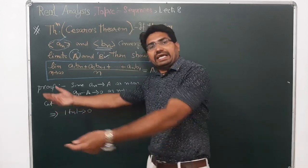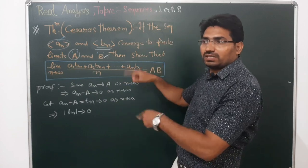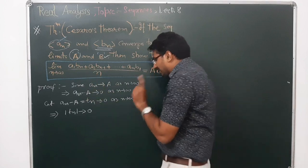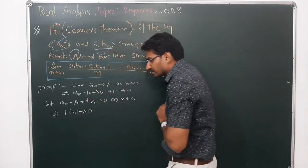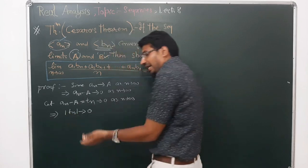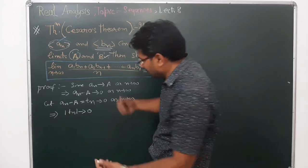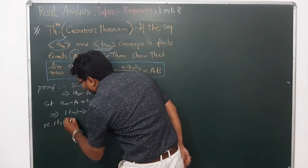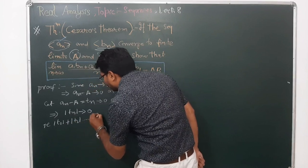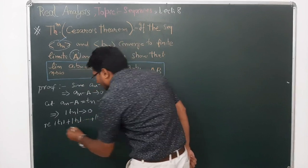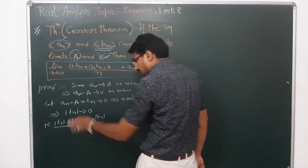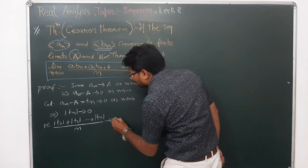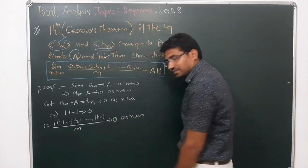If you have a sequence a_n converging to a limit, the arithmetic mean will also converge to the same limit. That means if t_n converges to zero, then the arithmetic mean of the first n terms — that is (t_1 + t_2 + ... + t_n) upon n — will also converge to zero as n approaches infinity.